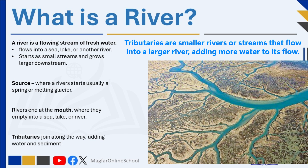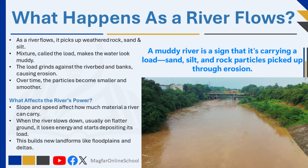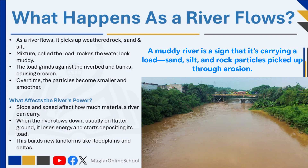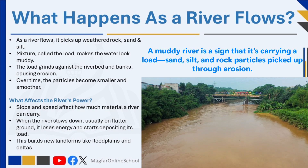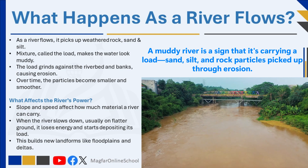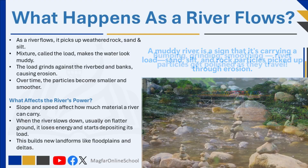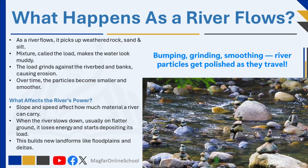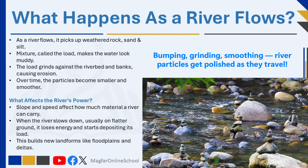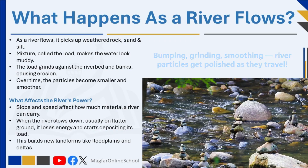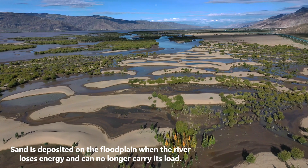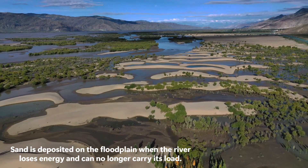As the river flows, it picks up bits of weathered rock, sand, and silt. This moving mixture, called the load, gives many rivers their muddy color. The load grinds against the riverbed and banks, eroding them piece by piece. Farther downstream, the particles become smaller and smoother as they collide with one another and the channel floor. The river's ability to move material depends on slope and speed. When the current slows, usually on flatter ground, it loses energy and deposits its load, building new landforms.